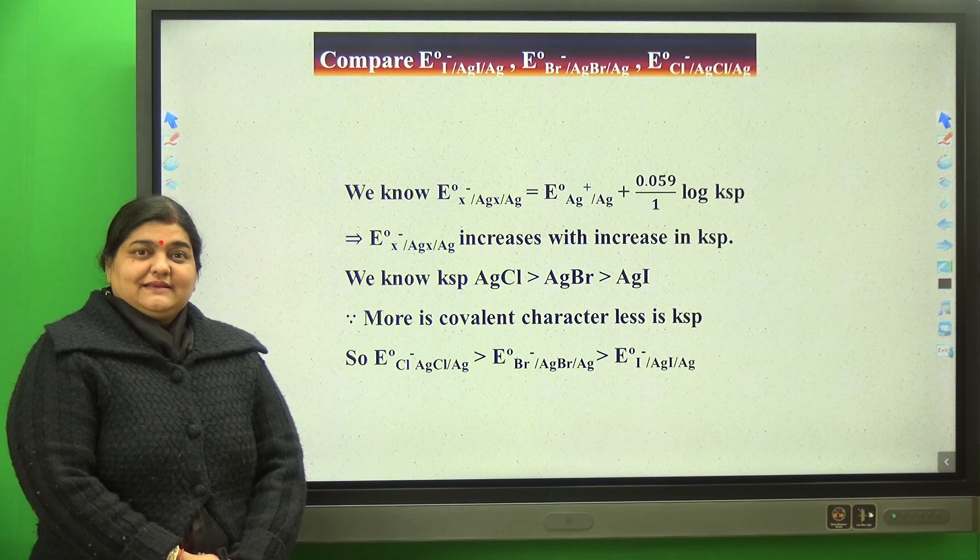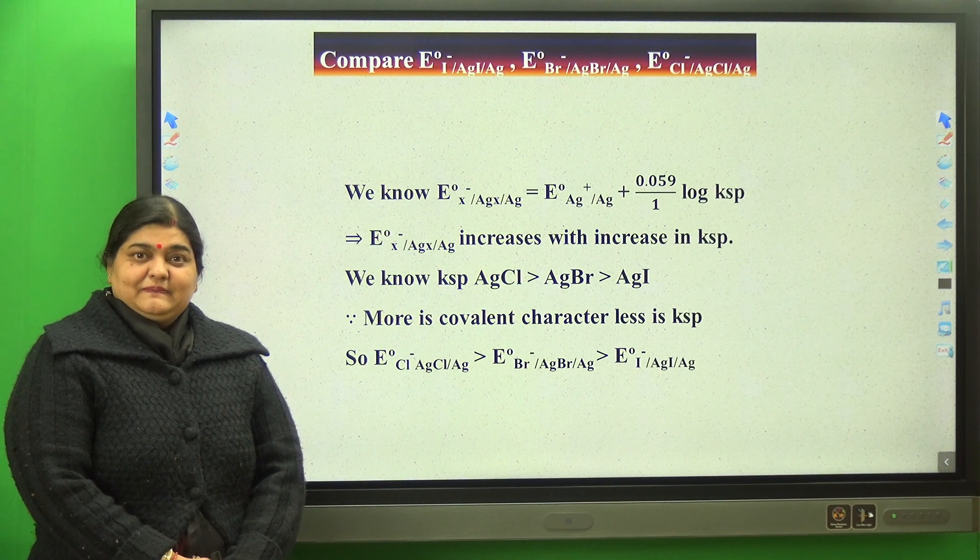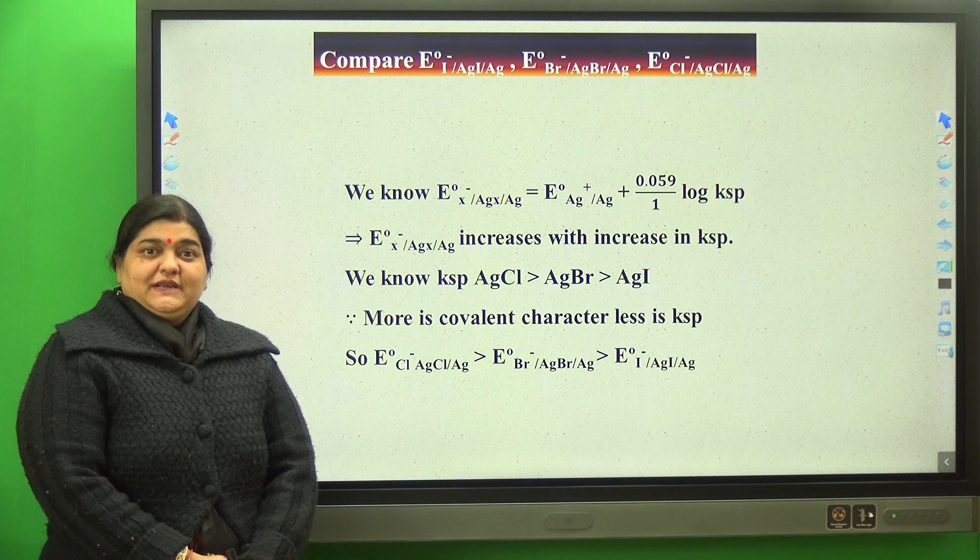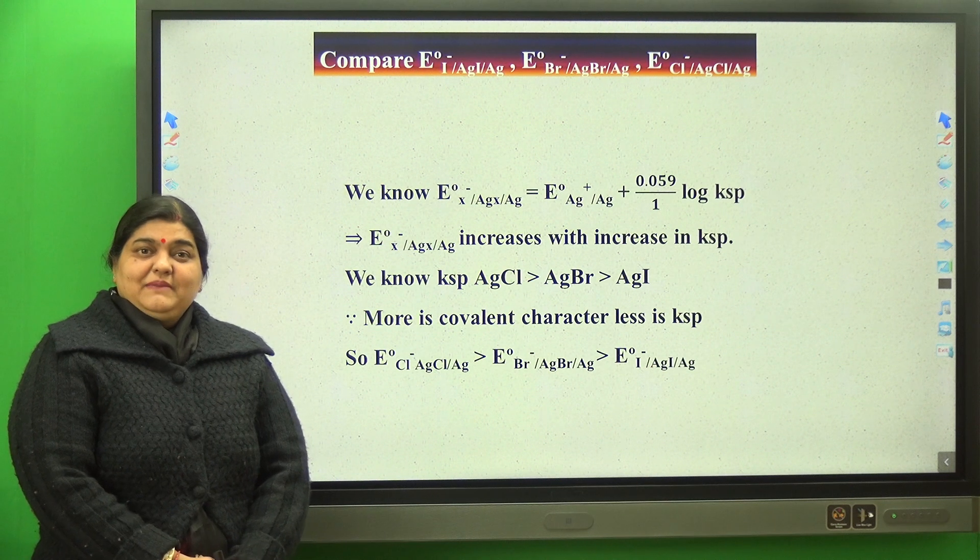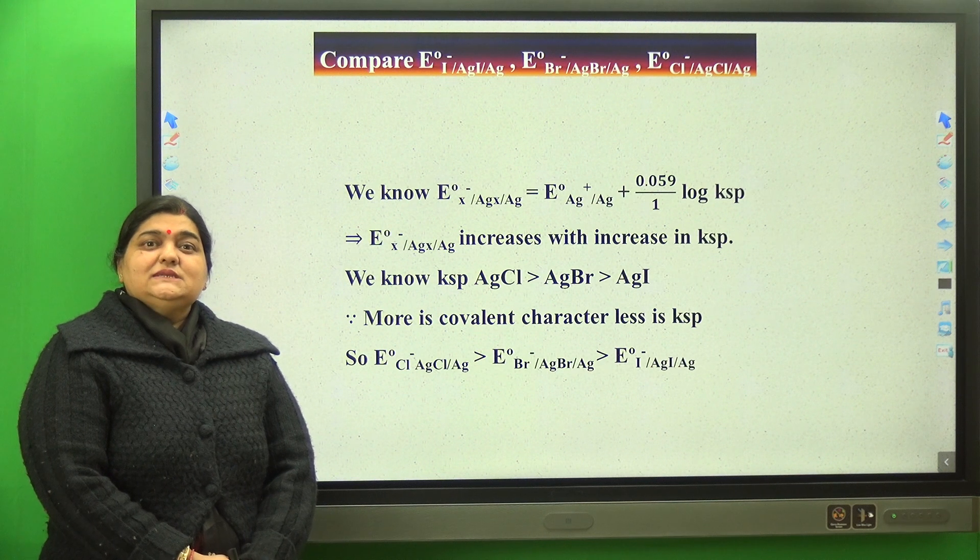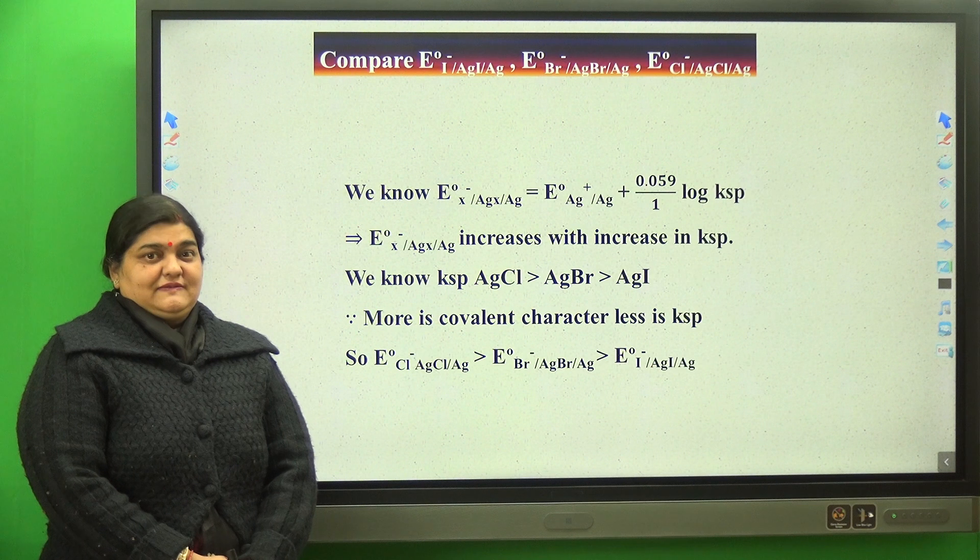Dear students, there is one very important relationship in electrochemistry—that is the relationship between electrode potential of a metal-metal ion half cell and a metal coated with its insoluble salt dipped in its common anion half cell.